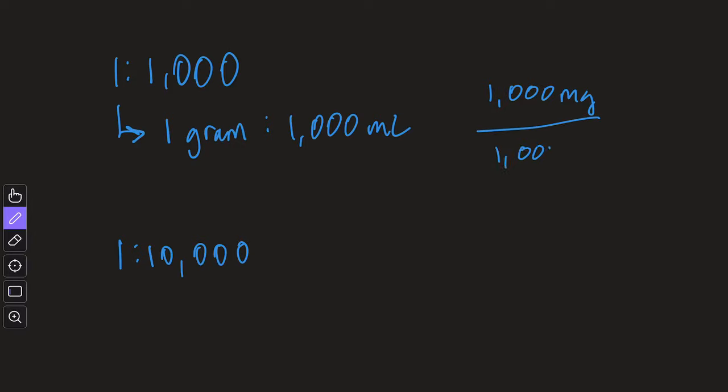So let's take a minute and learn about what that ratio actually means. The first thing you'll notice is that there is actually a ratio, so 1 to 1,000 or 1 to 10,000. The 1 in this case on the left side of the colon represents the number of grams of medication in the amount of fluid which is on the right side, or 1,000 milliliters in this case.